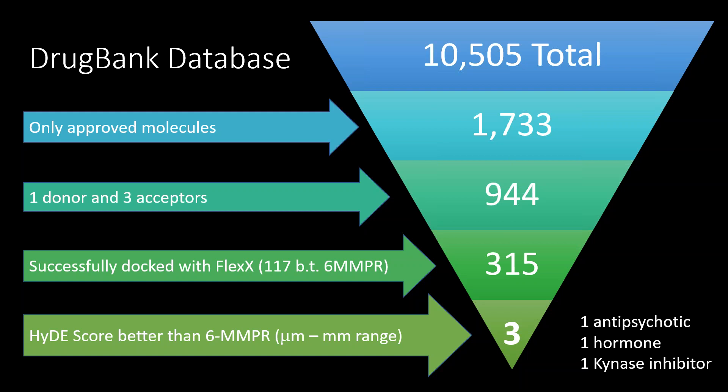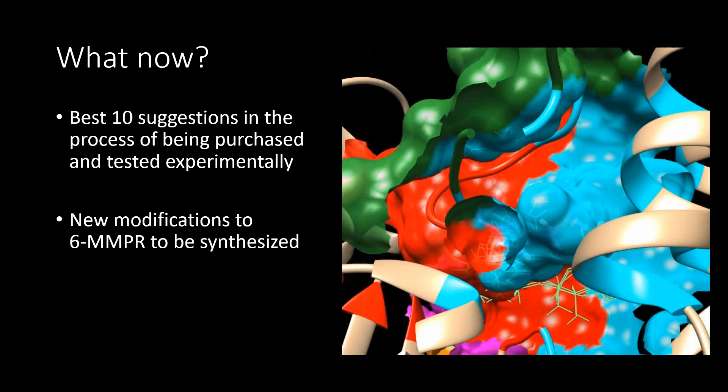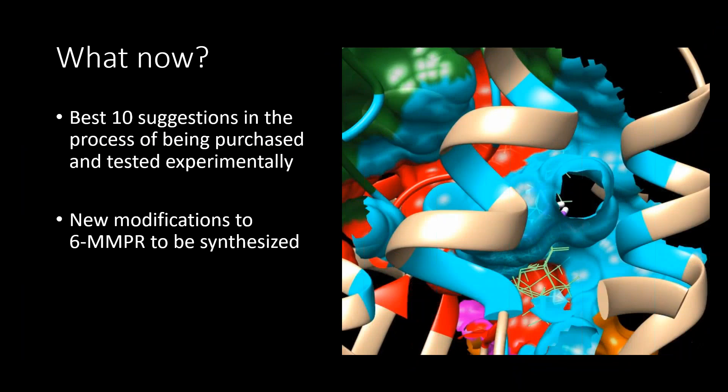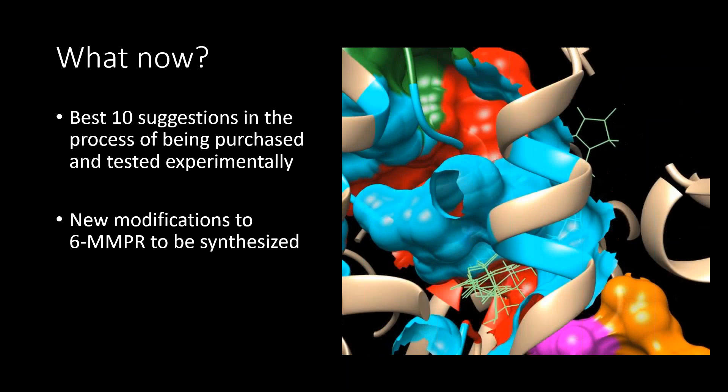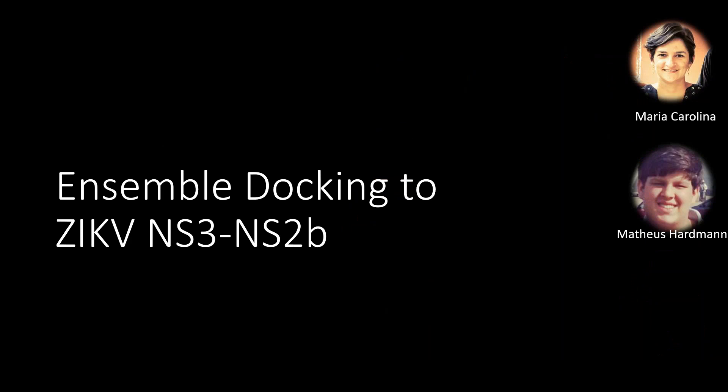Of those three top candidates, one was an antipsychotic, one was a hormone, and one was a kinase inhibitor. It's very interesting to have an antipsychotic there because it can already get into the central nervous system — exactly where Zika affects brain development. We were trying to purchase those drugs to test and also thinking on new modifications to the W6-MMPR that could be even better.